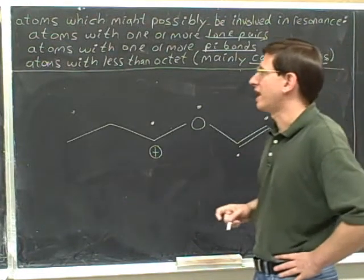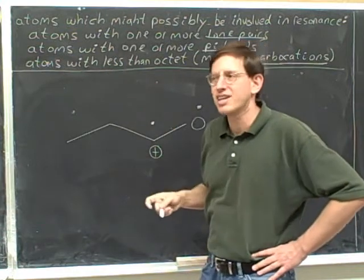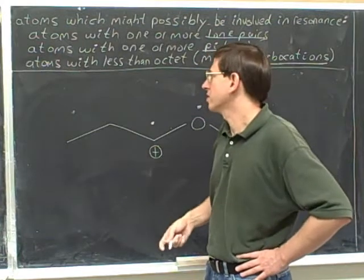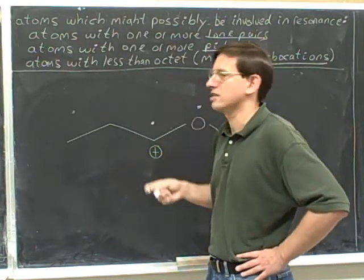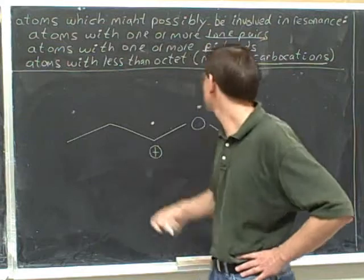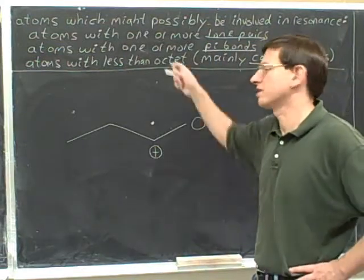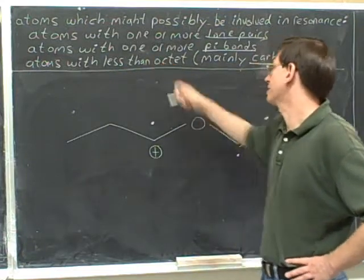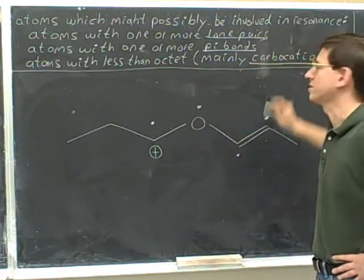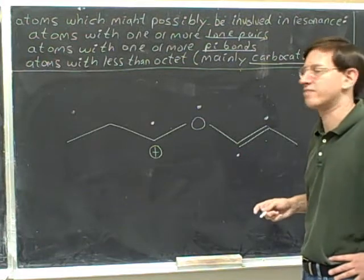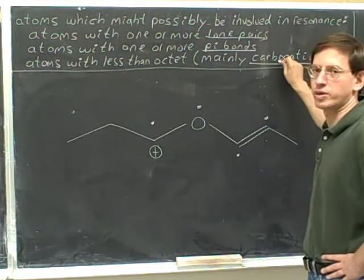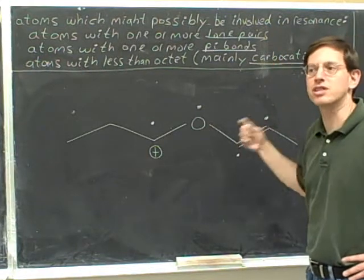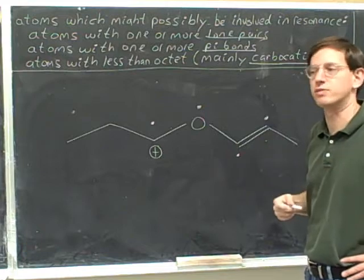Remember that the characteristic of an atom with less than an octet was mentioned just for completeness. In almost all examples you're going to see in organic chemistry, the only types of atoms with less than an octet that you'll deal with in resonance are carbocations. You'll see other atoms with less than an octet, but you're not going to be worried about resonance structures for those. So for all intents and purposes, this characteristic means carbocations. The key things to focus on are: lone pair, pi bond, carbocation — those are the characteristics for identifying candidates for resonance.